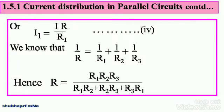Or I1 is equal to I R divided by R1. Take this as equation or expression 4. We know that for any parallel circuit, the general formula is 1 by R is equal to 1 by R1 plus 1 by R2 plus 1 by R3.